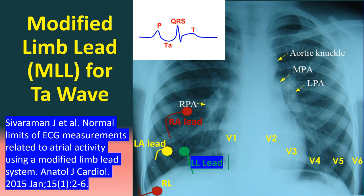A modified limb lead system for detection of atrial repolarization on surface ECG has been devised by Shivaraman and colleagues from India. The atrial repolarization wave, or TA wave, is usually obscured by the QRS complex in routine ECG. In this modified system, the right arm electrode is placed in the 3rd right intercostal space slightly to the left of the midclavicular line, the left arm electrode in the 5th right intercostal space slightly to the right of the midclavicular line, and the left leg electrode in the 5th right intercostal space in the midclavicular line. Chest electrodes and the right leg electrode are placed in standard positions.